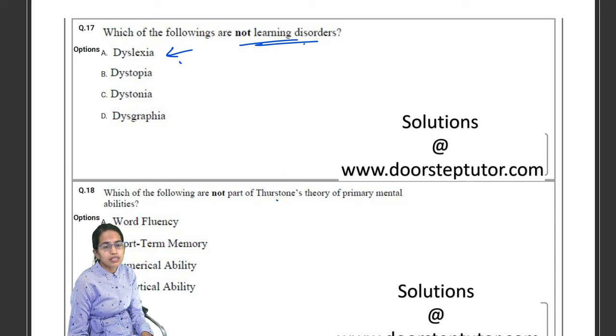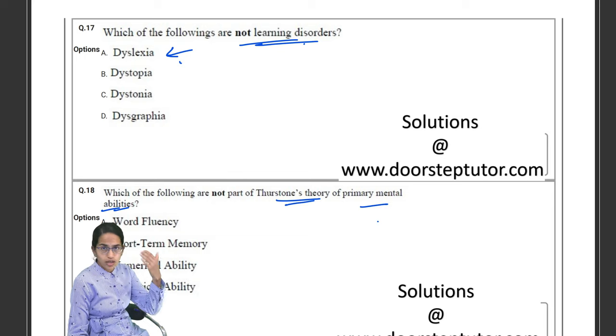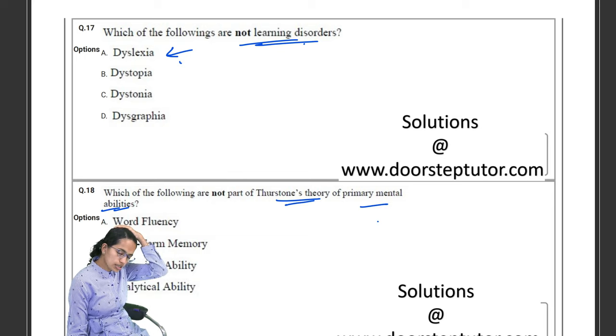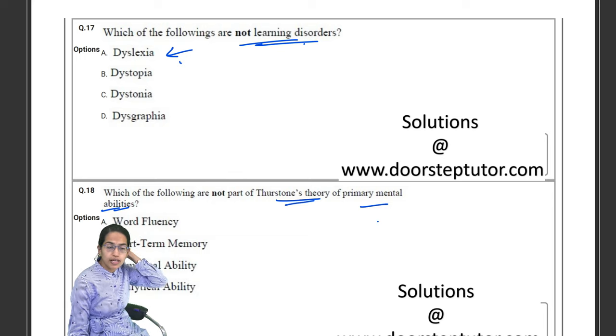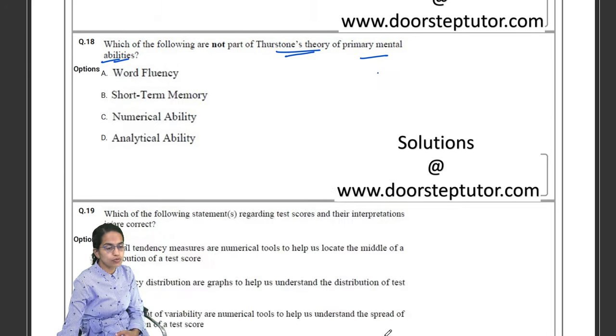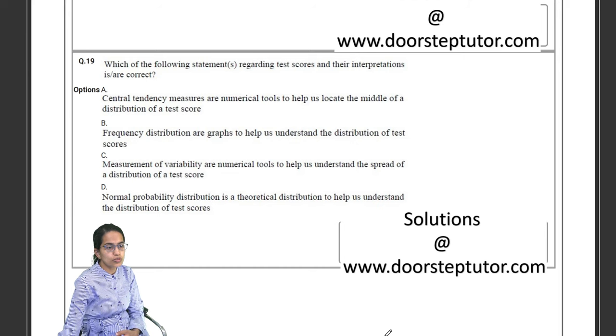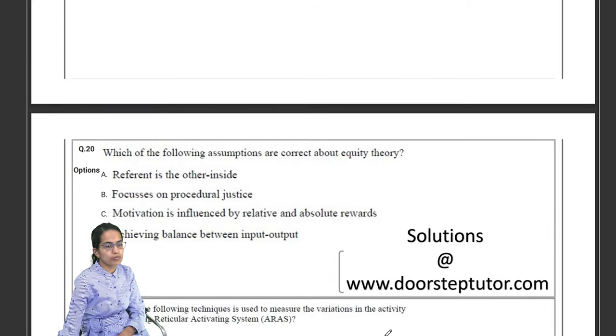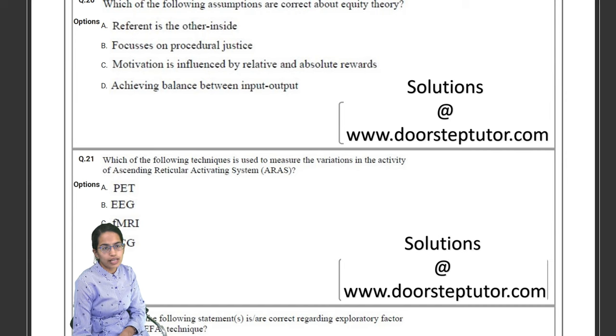Then we have Thurston's theory of primary mental ability. Again a question from the section on learning, intelligence, and here we need to understand that again multiple correct answers would be there in these questions, so you need to have the interpretations very, very carefully.